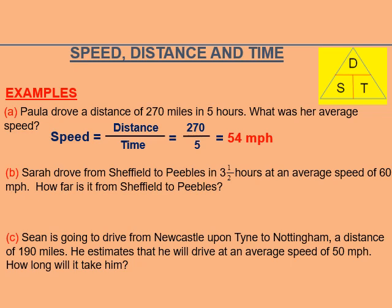You will get the answer 54. Remember to write the correct unit of speed: mph, miles per hour. Question B: Sara drove from Sheffield to Pebbles in three and a half hours at an average speed of 60 mph. How far is it from Sheffield to Pebbles? How far means it is asking you to find the distance.